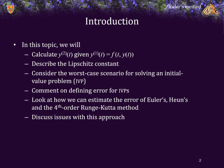We will then comment on defining errors for initial value problems. We will then look at how we can estimate the error of Euler's, Heun's, and the fourth order Runge-Kutta methods, and we will see how we can ensure that this error is below the required threshold. Finally, we will discuss issues with this approach and describe why we will need adaptive techniques in the subsequent lectures.